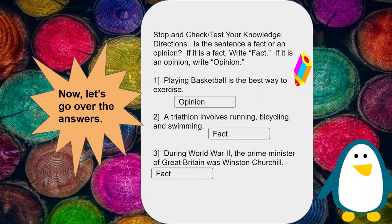Number one: playing basketball is the best way to exercise — that is an opinion. There are many different types of exercises; this is just one sport. A triathlon involves running, bicycling, and swimming — this is a fact; it could be proven. During World War II, the Prime Minister of Great Britain was Winston Churchill — this is also a fact that can be proven based on a reliable source.